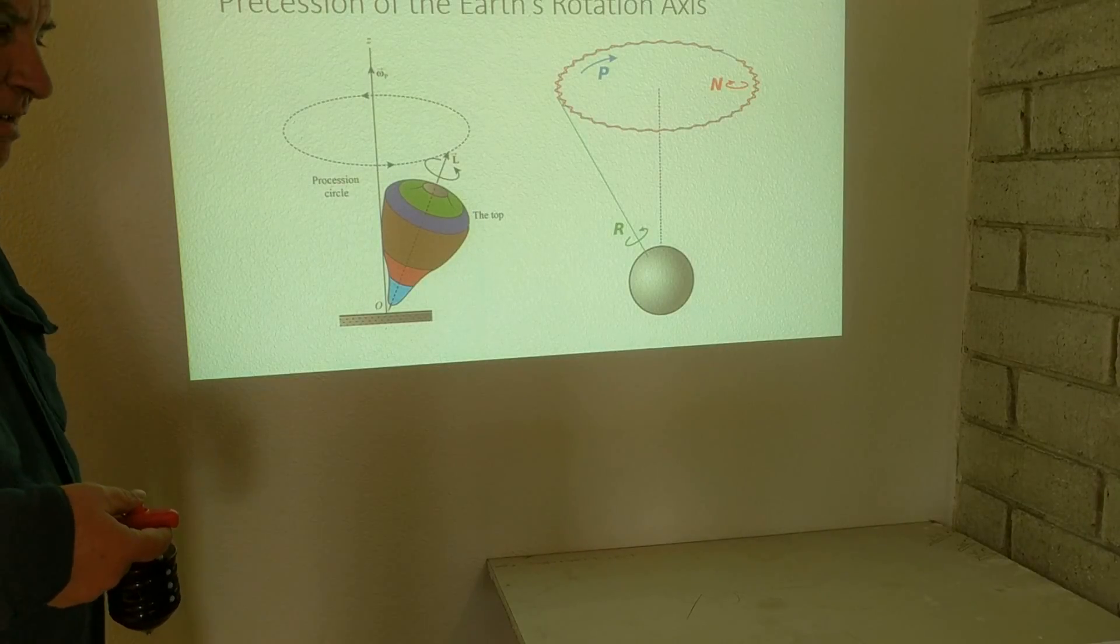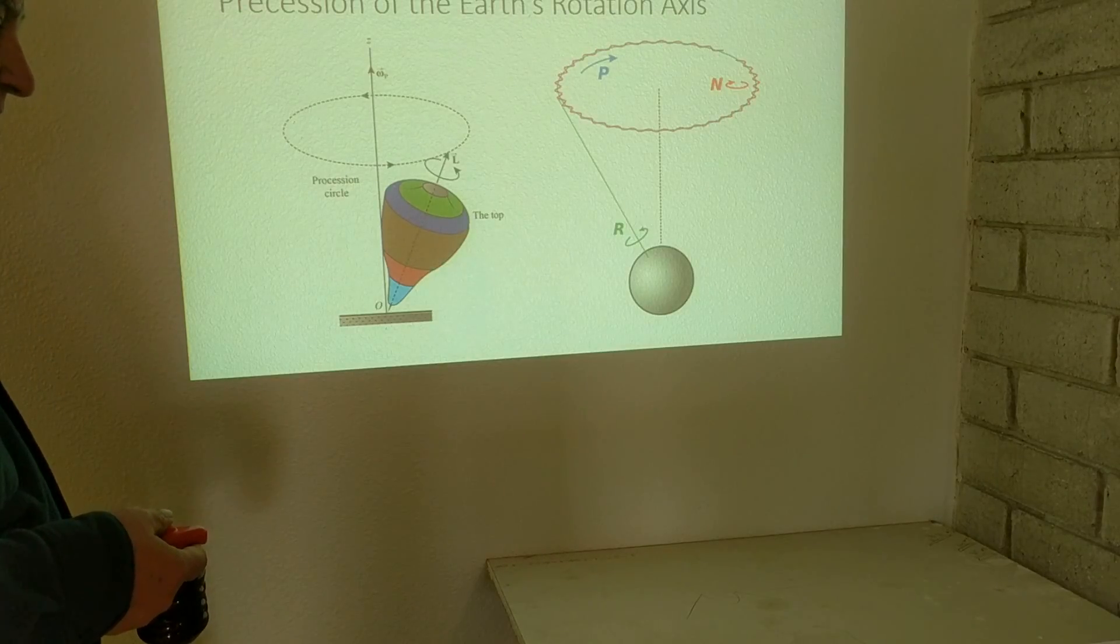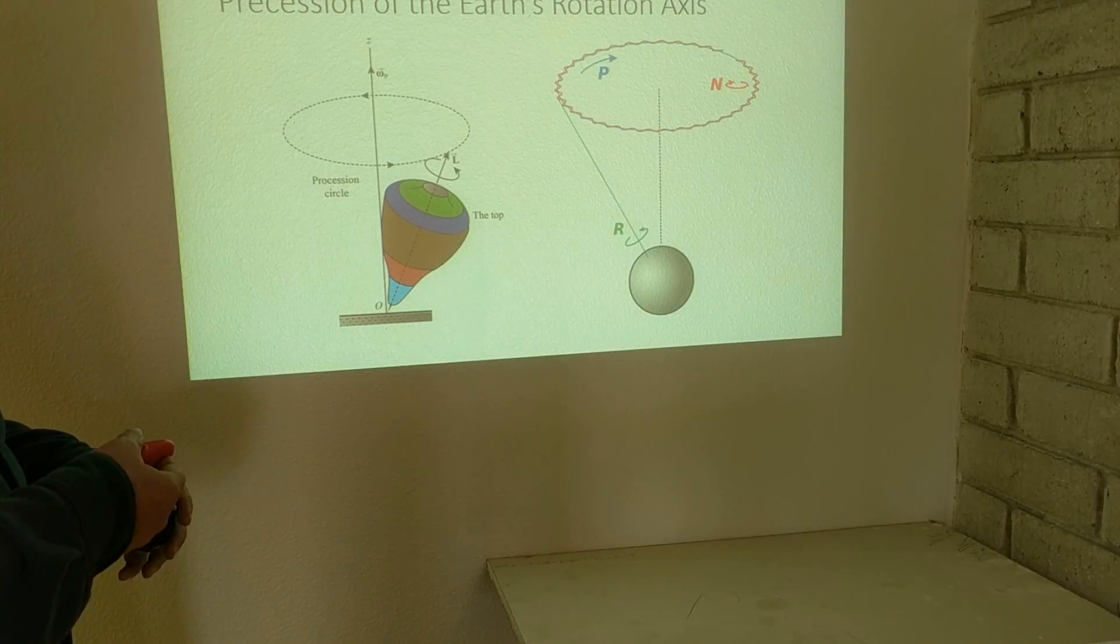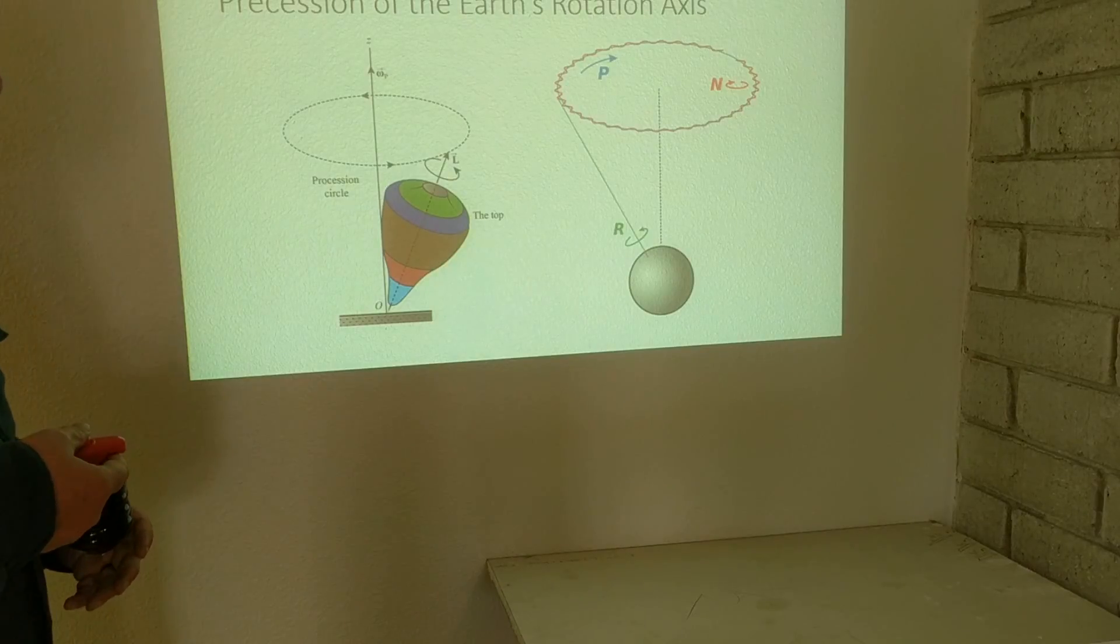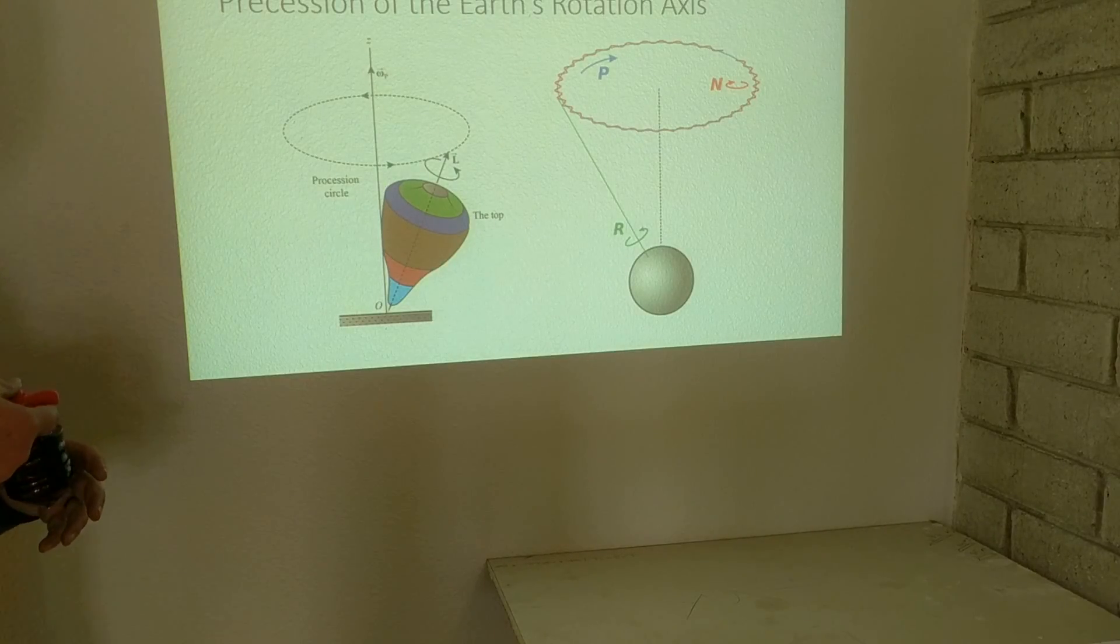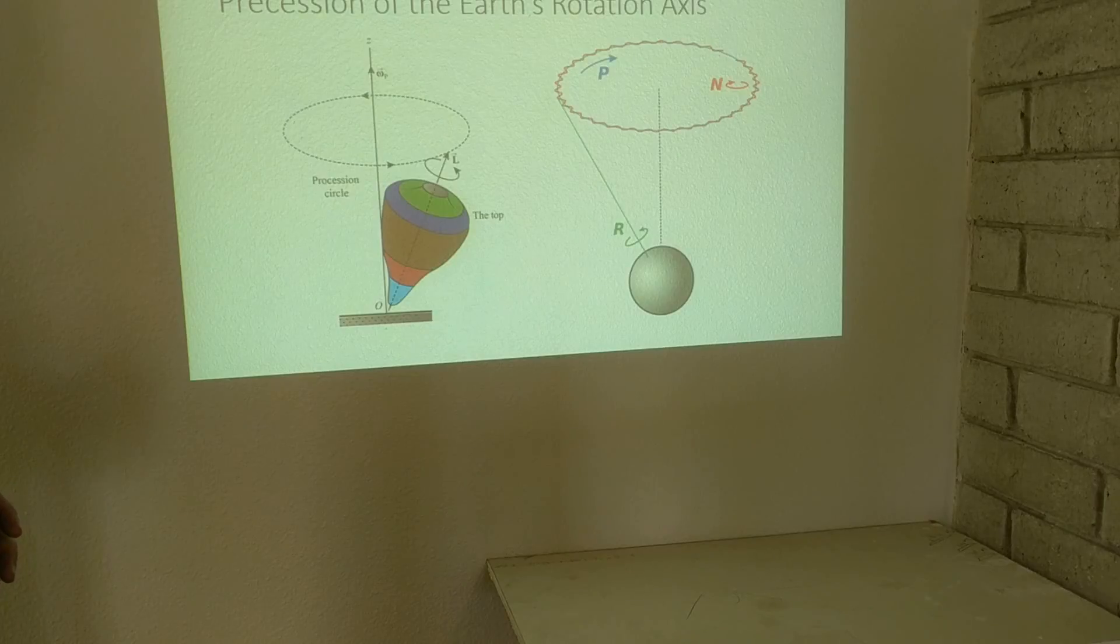We're going to demonstrate how precession works with the top. The top is spinning and also precessing, which means that the top will be wobbling a little bit slower than it spins.